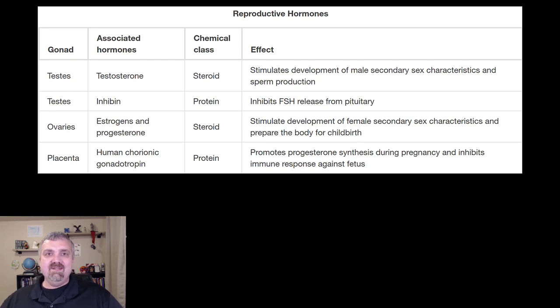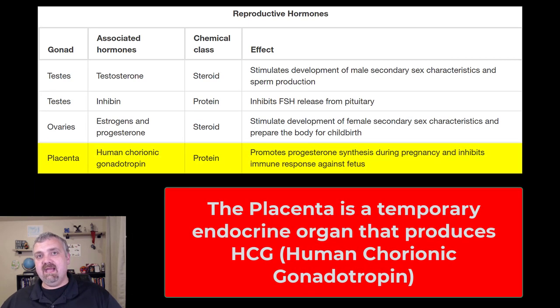We want to talk about here is the placenta. So the placenta becomes this temporary endocrine organ and it produces lots of different things. But the main one we care about is human chorionic gonadotropin. After ovulation, you do see this temporary increase in progesterone. And if it doesn't stay elevated, then there won't be a pregnancy. And that's why the placenta's role is to keep progesterone levels elevated.